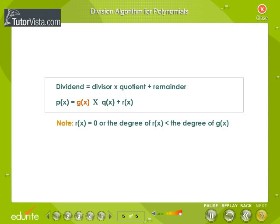If P(x) and G(x) are two polynomials, G(x) not equal to 0, there are polynomials Q(x) and R(x) such that P(x) = G(x) × Q(x) + R(x), where P(x) is the dividend, G(x) is the divisor, Q(x) is the quotient, and R(x) is the remainder. Note: R(x) = 0 or the degree of R(x) is less than the degree of G(x).